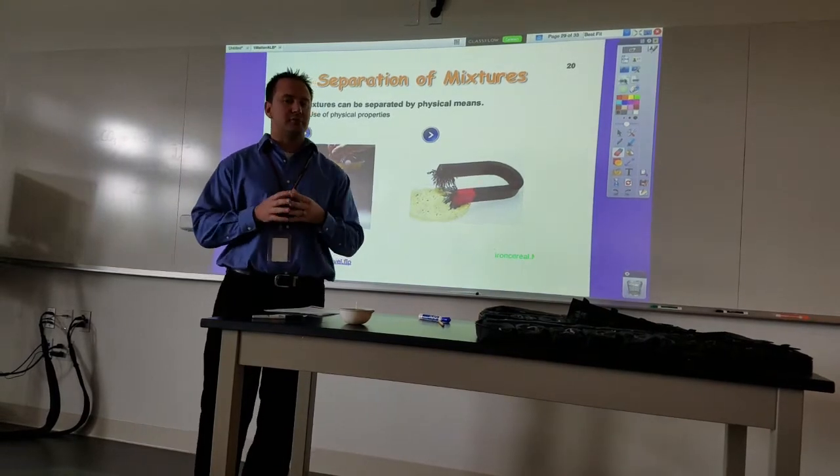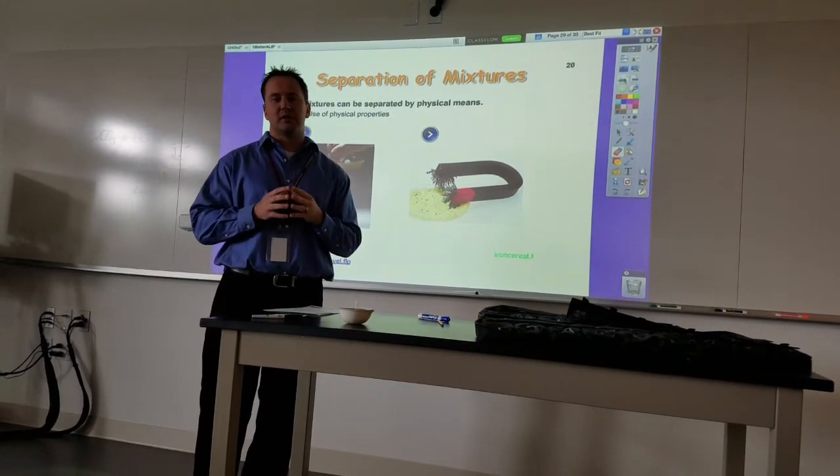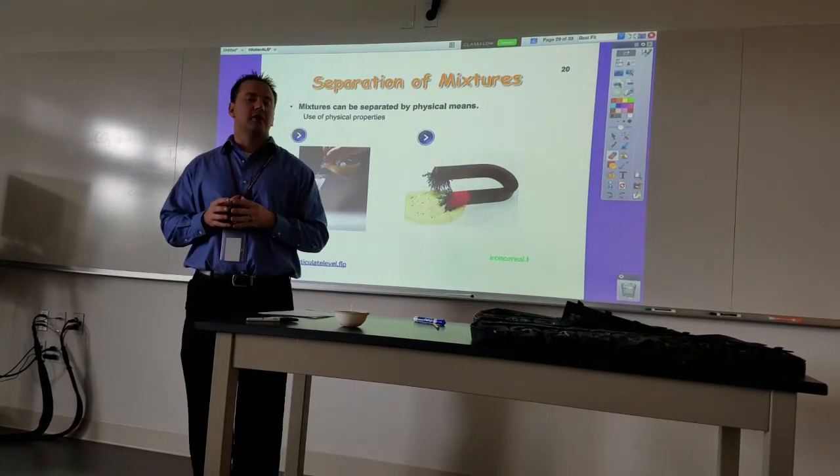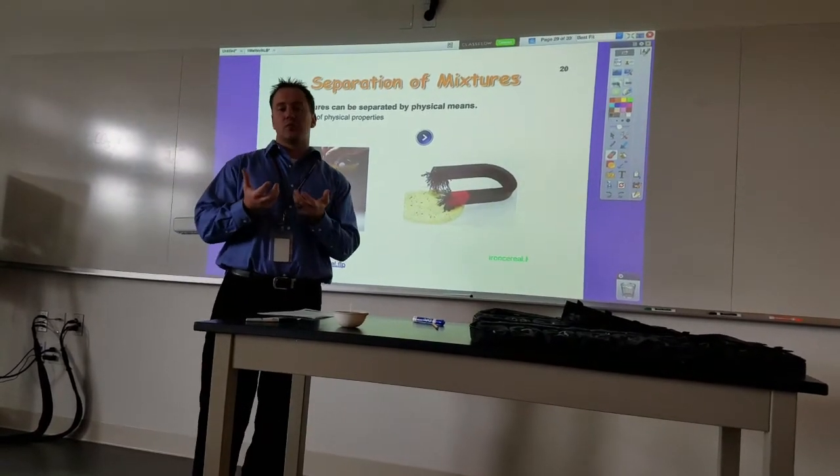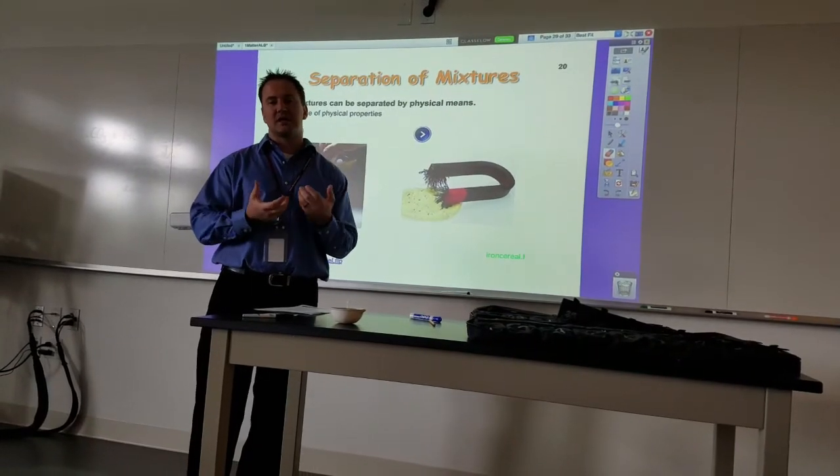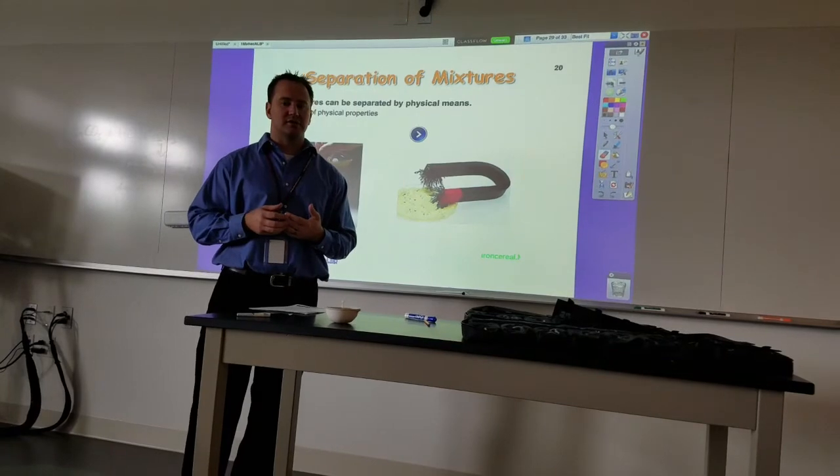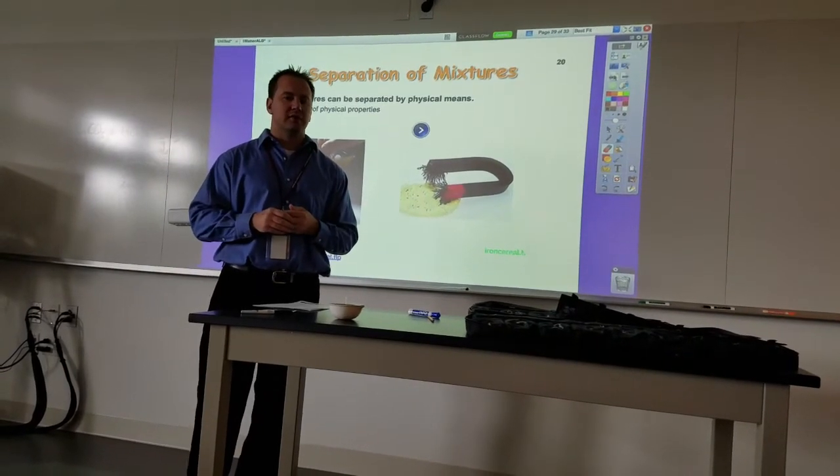So those are ways of separating a mixture physically. If you want to separate a pure substance like a compound, which contains more than one type of element, what has to happen is a chemical reaction in order to separate them. One of those would be electrolysis. We'll get into that in more detail later.